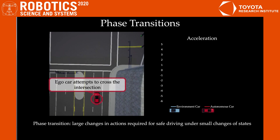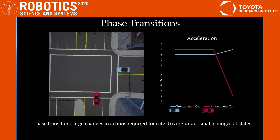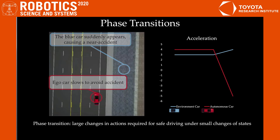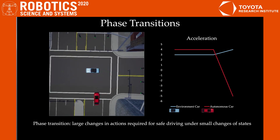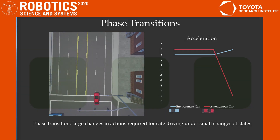In this example, we have a red eagle car trying to cross the intersection, but there is a large gray wall occluding the red car's field of view. When the eagle car drives close to the intersection, a blue car suddenly appears from the occluded viewpoint, causing a near accident scenario. The red car must now slow down to avoid the accident. This is an example of a phase transition, because a small change in the blue car's state, such as acceleration, dramatically influences the red car's action of stepping on the gas or the brakes.